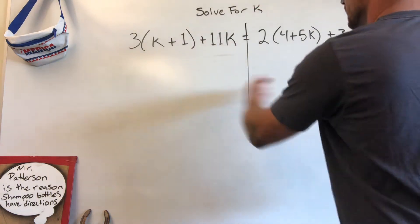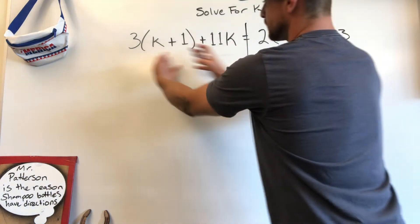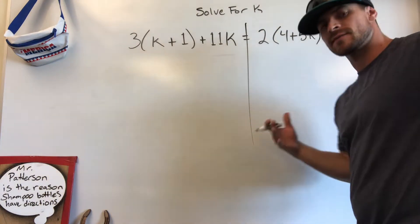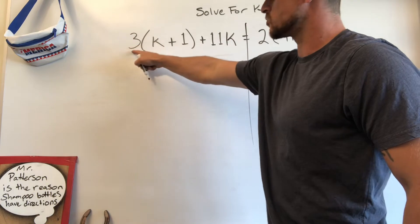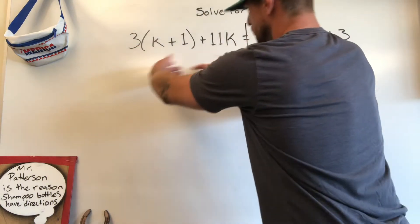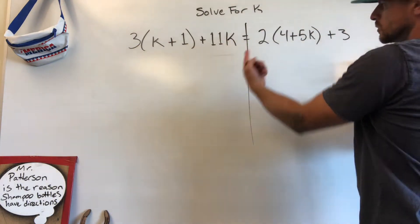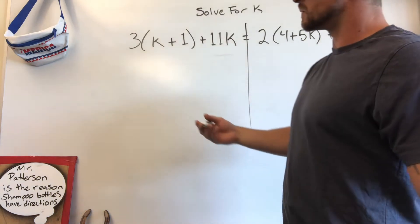You're just going to break the left and right side up and simplify everything. You do need to have some prior skills where you know how to distribute this 3 to the k, distribute the 3 to the 1, and then we're going to combine our like terms. Over here, we're going to be doing the exact same thing, and then I'll tell you what we do from there.